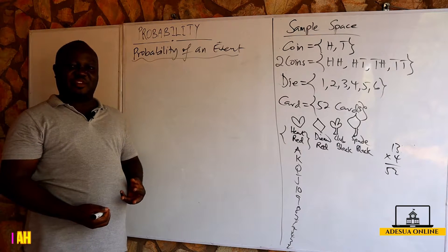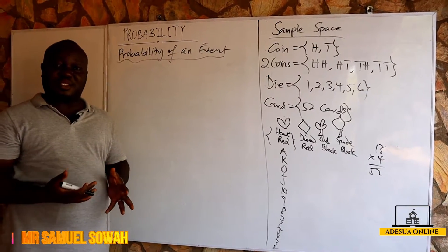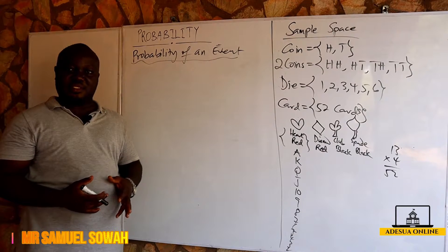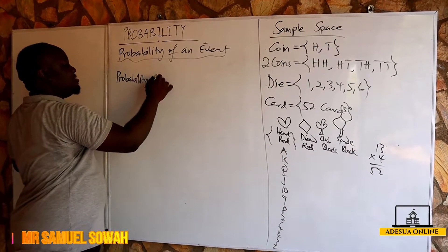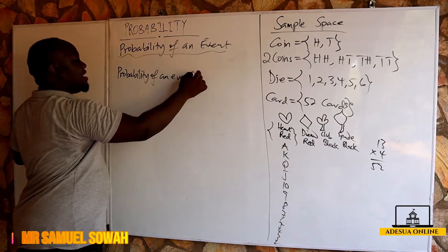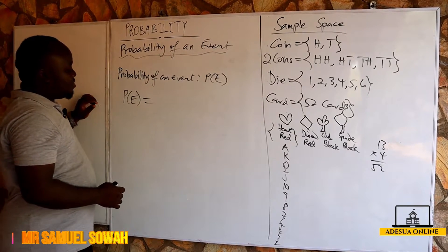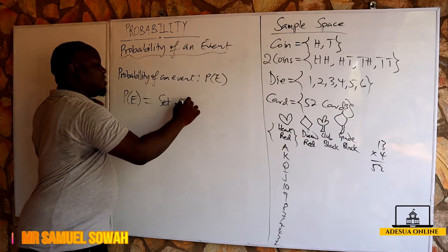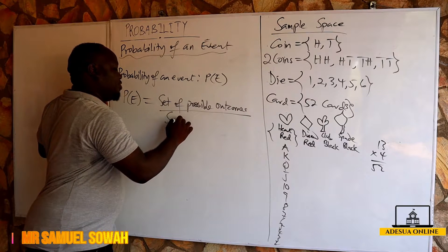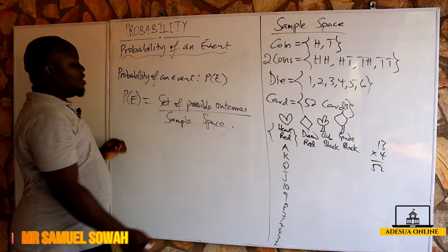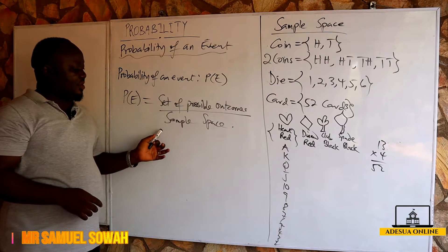When we talk about the probability of an event, the probability of an event is the set of possible outcomes over the sample space. So, the probability of an event is equal to the set of possible outcomes divided by the sample space.